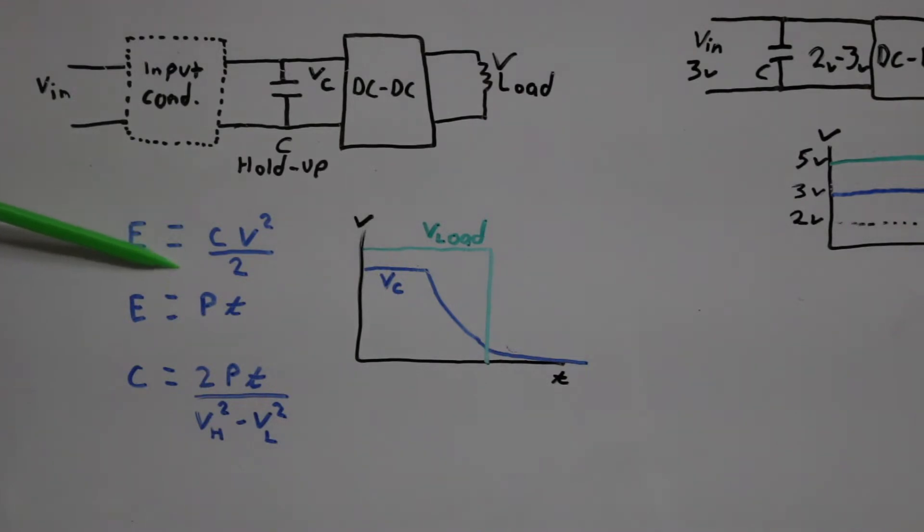Looking at equations for the energy stored in a capacitor, energy equals capacitance times voltage squared over 2, and energy in electricity terms is power times time.